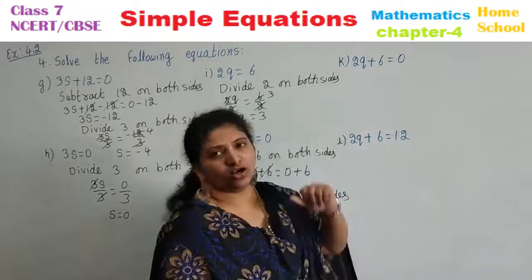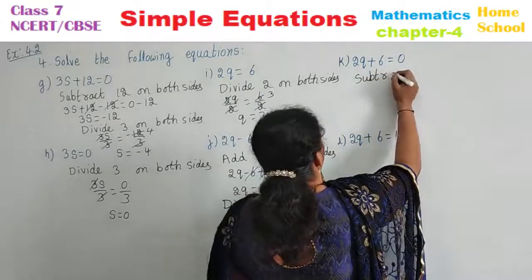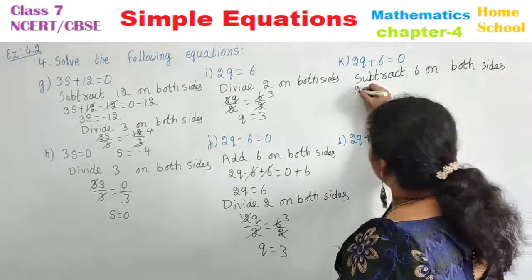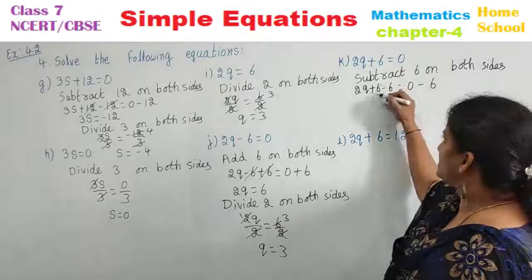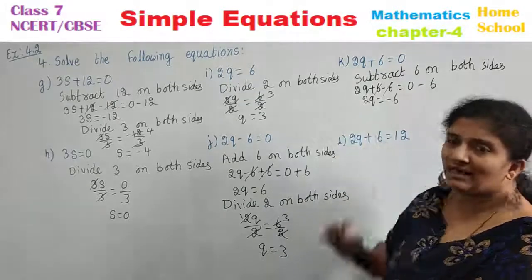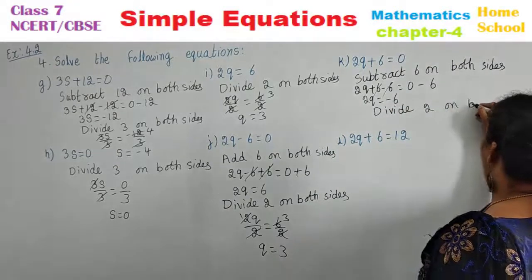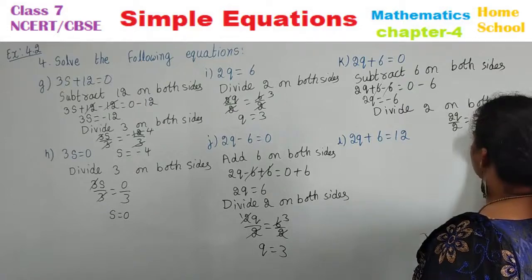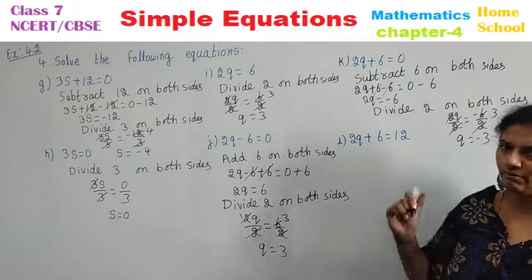K sub-question: 2Q plus 6 is equal to 0. 6 is adding here, so we need to subtract. Subtract 6 on both sides. 2Q plus 6 minus 6 is equal to 0 minus 6. Plus 6 minus 6 cancels. 2Q is equal to minus 6. Again, 2 is multiplied, so we divide with that 2. Divide 2 on both sides. 2Q by 2 is equal to minus 6 by 2. 2 and 2 cancel, 2 threes are 6. Therefore Q is equal to minus 3 is your answer.